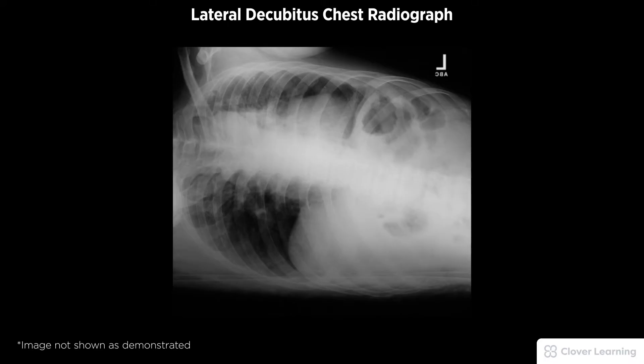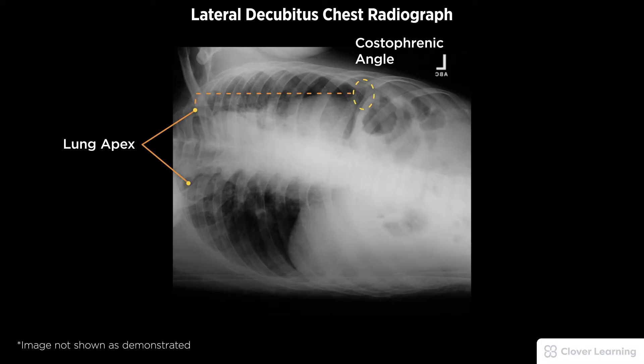A diagnostic lateral decubitus chest radiograph should be free of motion and rotation and demonstrate the entirety of the affected side, to include the lung apex to the costophrenic angle.